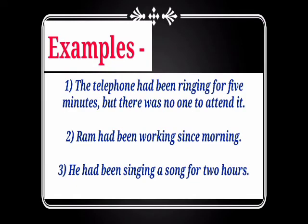Example: The telephone had been ringing for 5 minutes, but there was no one to attend it. Here, duration of time is given — 5 minutes — so we use 'for'. Second example: Ram had been working since morning. Another: He had been singing a song for 2 hours. I think you understood the concept of 'since' and 'for' and the difference between both.